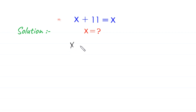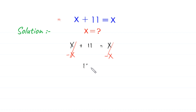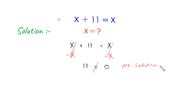Let's start. If we solve this equation x plus 11 equals x by subtracting x from both sides, the x terms get cancelled and we are left with 11 equals 0. But 11 is not equal to 0, which means this equation has no solution. Now let's try it another way.